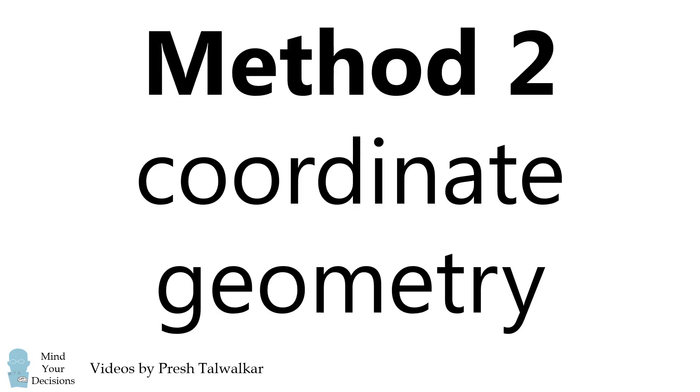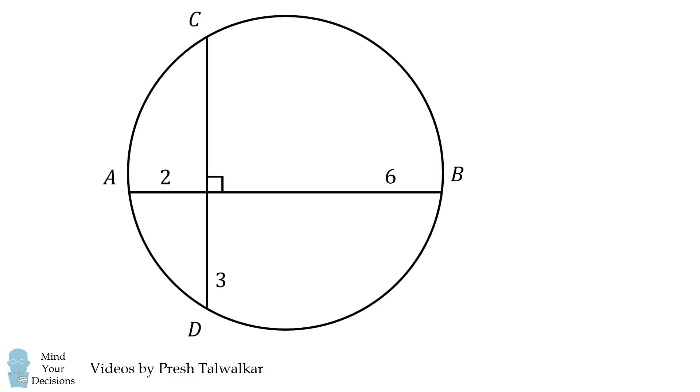So now let's go on to the second method that uses coordinate geometry. This is actually the way that I solved the problem because I didn't know that earlier formula. Here's how I solved it. I set up a coordinate system where the two chords intersect at the origin.